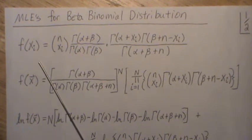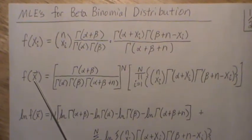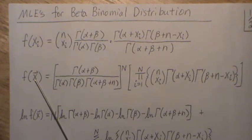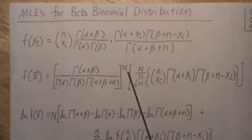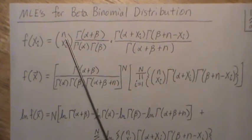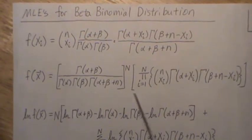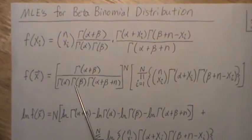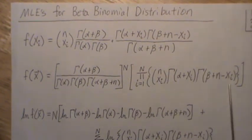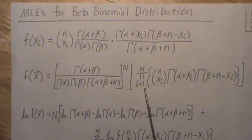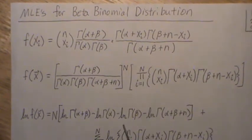So we need a joint likelihood. This is a vector representing all the data, and there are N observations — capital N, because little n is indexed for the binomial distribution. It has these constants out front raised to the N, and that's the product of these three terms from one to N, our sample size.